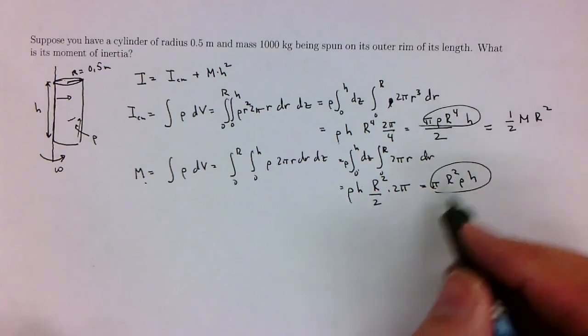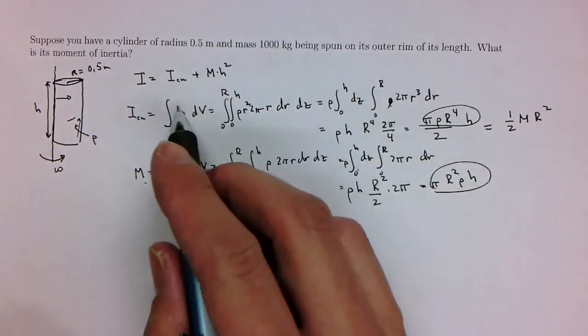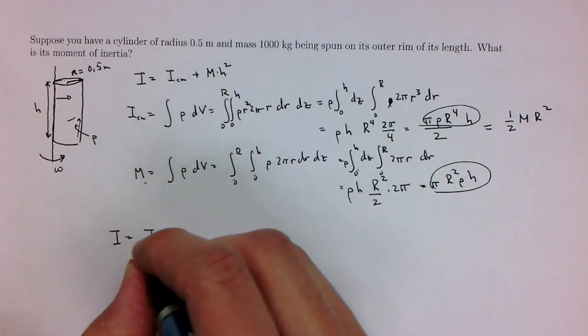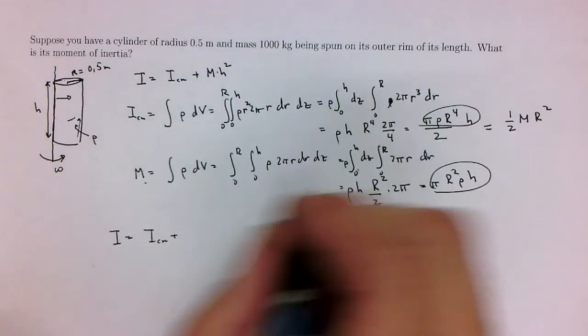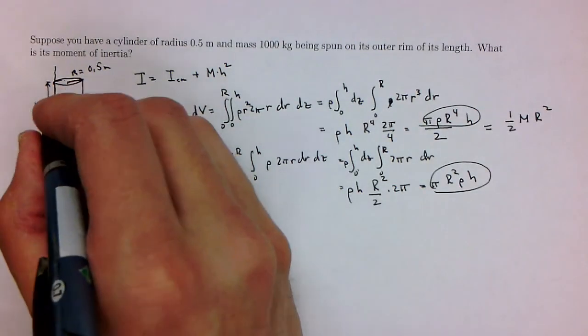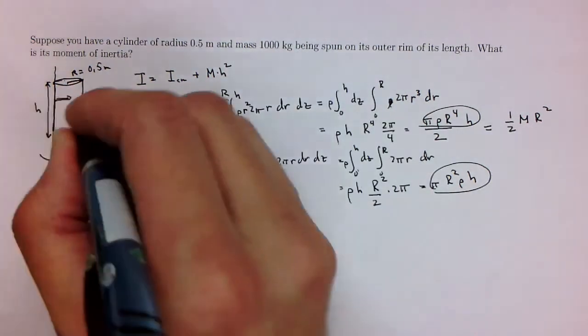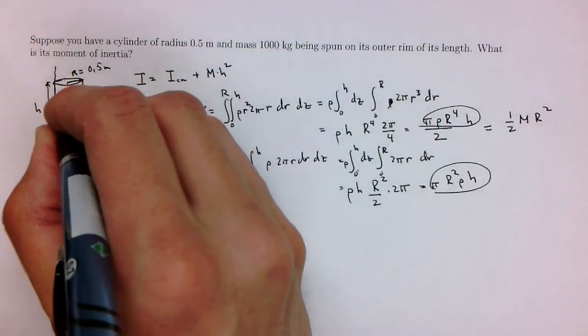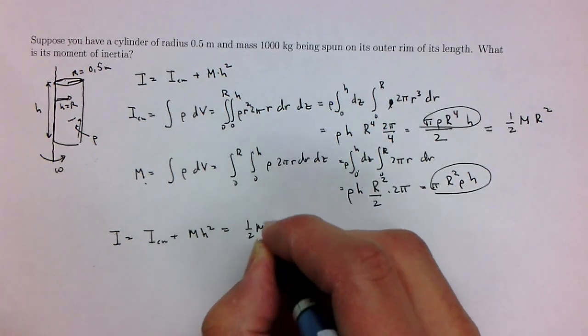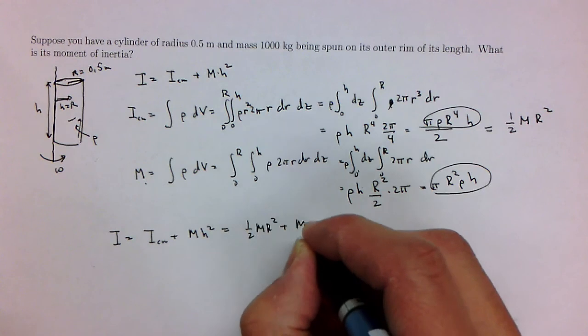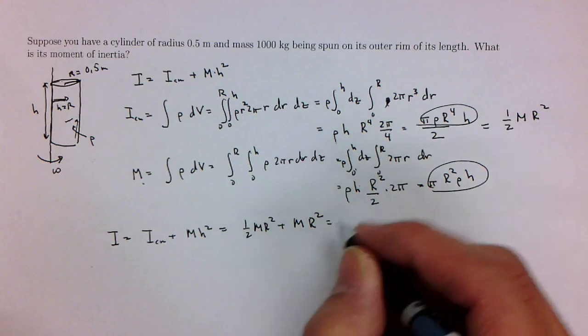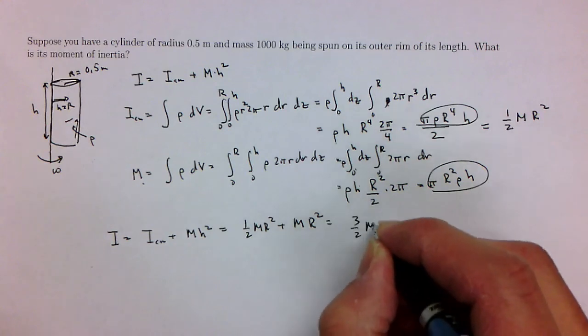In any case, we now can apply the parallel axis theorem. I is equal to I cm plus m h squared. Let's look at this. I chose something bad here. I probably shouldn't have chosen h. But this h here is equal to r. So it's going to be equal to 1 half m R squared plus m R squared because the h separation is r. So this is going to be equal to 3 halves m R squared.